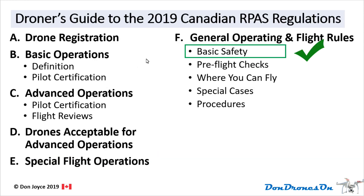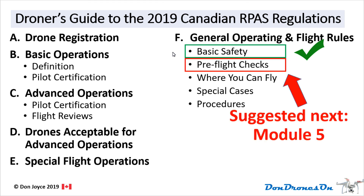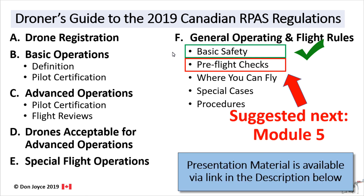That covers all of the basic safety regulations in the 2019 Canadian ARPAS regulations under the general operating and flight rules sector. Congratulations on completing Module 4. I recommend moving on to Module 5, which covers pre-flight checks. The presentation material for this and all training modules is available in one package for a nominal fee via the link in the description. Please like, subscribe, and leave a comment — I'd love to hear from you.